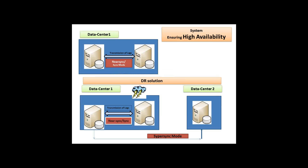The next part of the screen shows the DR solution: what if my data center one, assume at St. Louis, gets crashed by any issues like an earthquake, power interruption, or hardware failure? Then through the super async mode, my data center two, which is at some other location like Lexington, will become active. So we learn what HADR is and how it works, but how to make sure that logs are getting synchronized — it is the near sync and sync modes that help in achieving that.